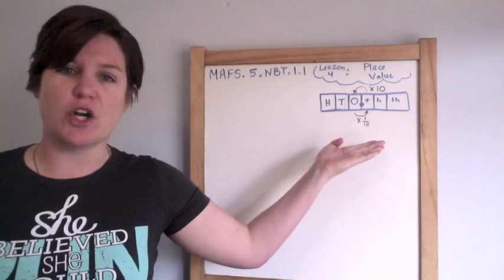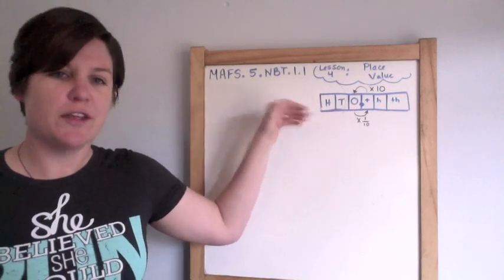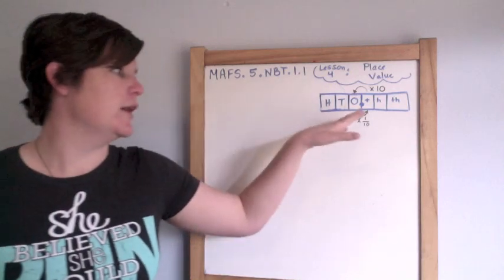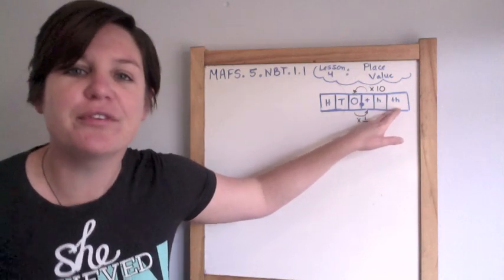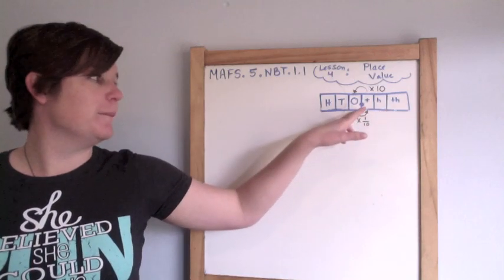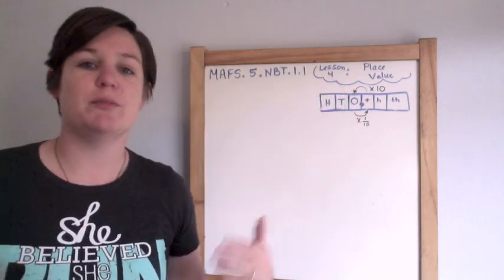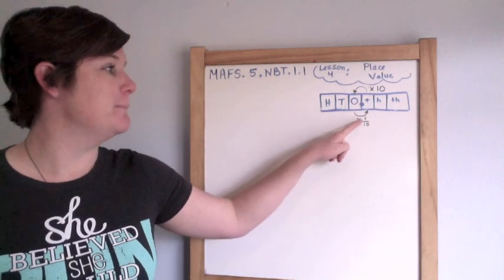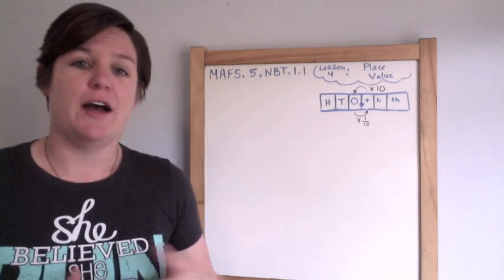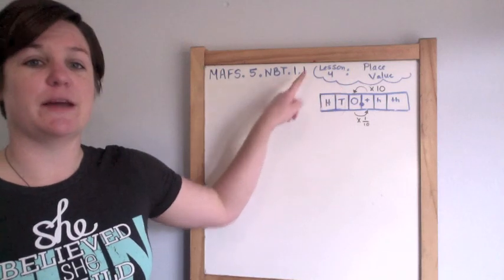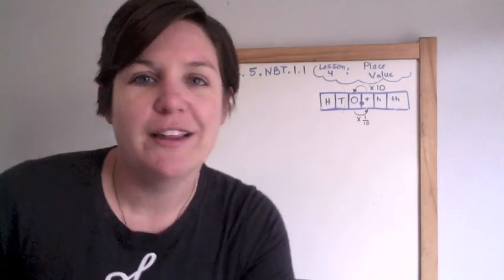I want to point out this handy dandy chart — you can see the decimal point right in the middle. We have the ones, tens, and hundreds place, and in fifth grade we go further than that. We've got the tenths, hundredths, and thousandths. For each jump in place value we multiply by ten, and going one place to the right we're multiplying by one tenth — so times ten, times one hundred, times one thousand, times one tenth, times one hundredth, times one thousandth.